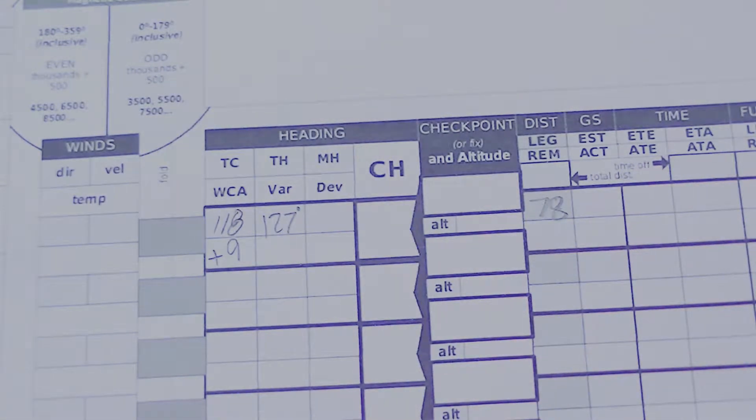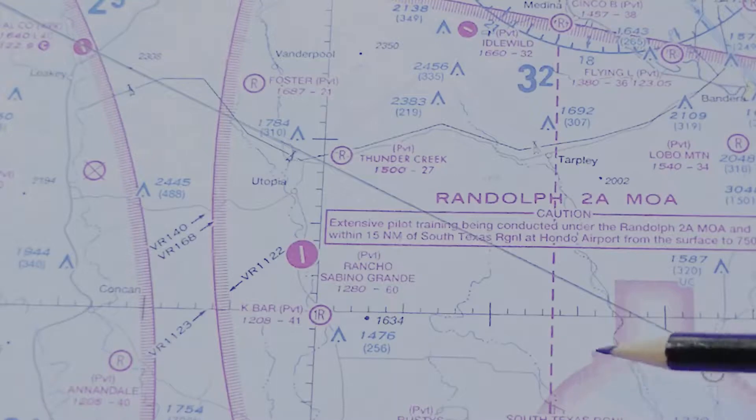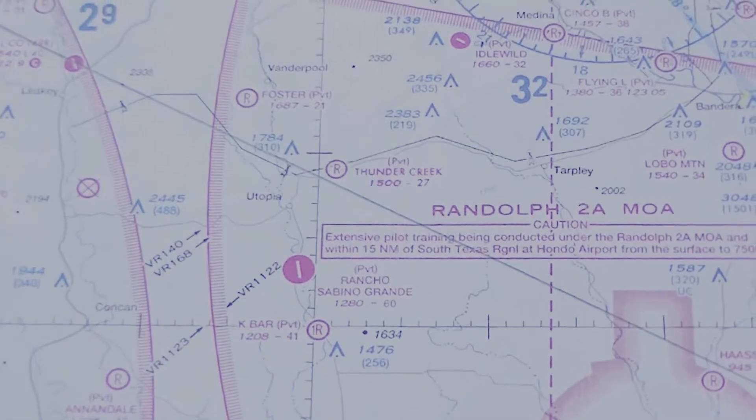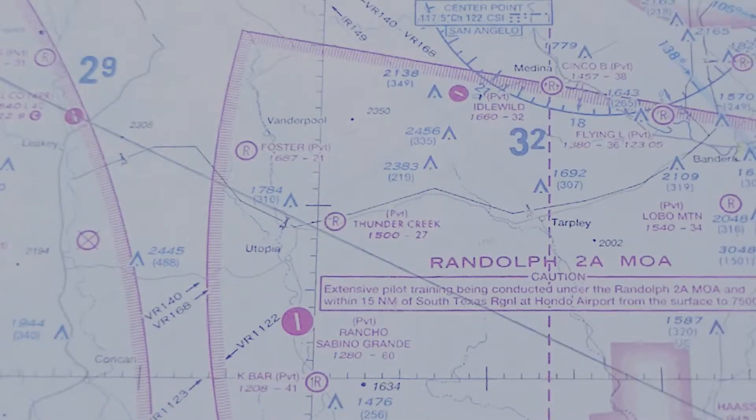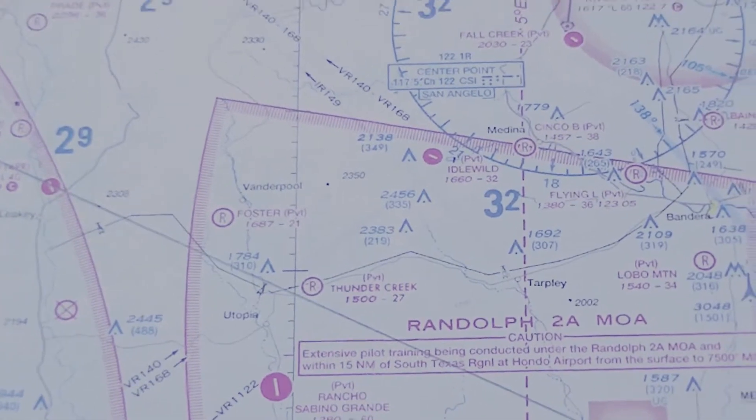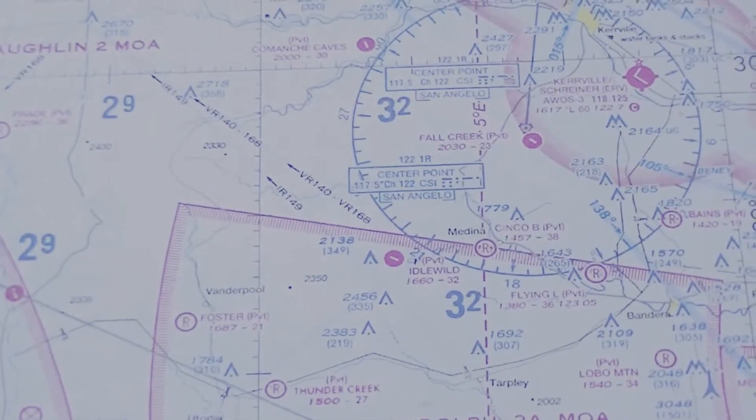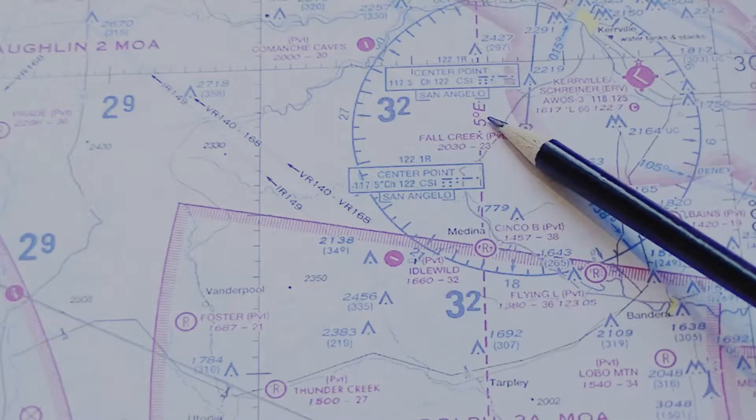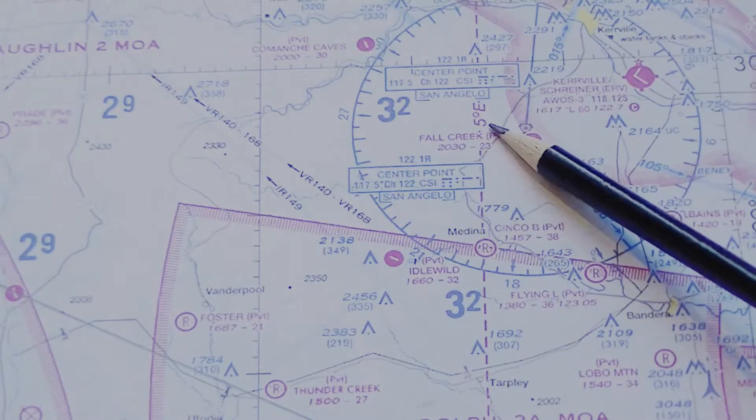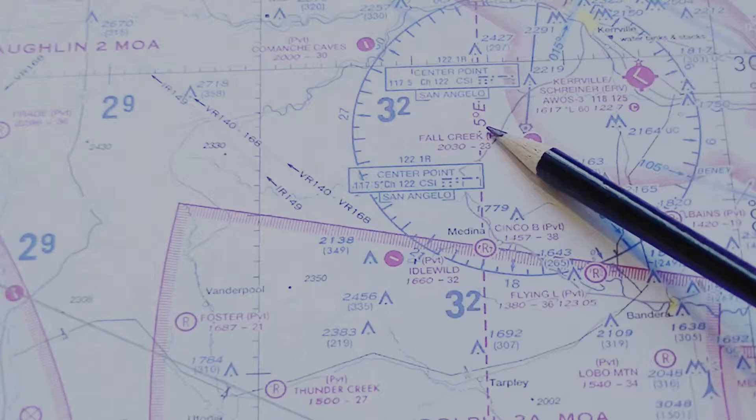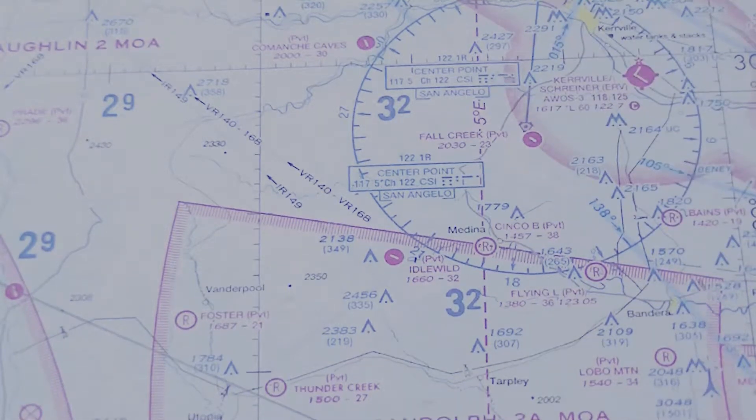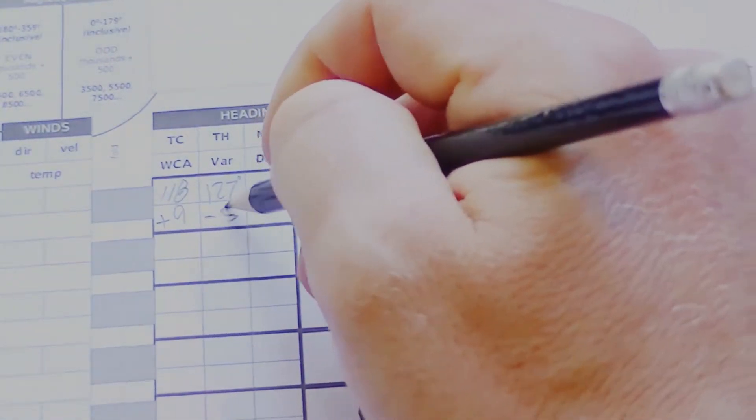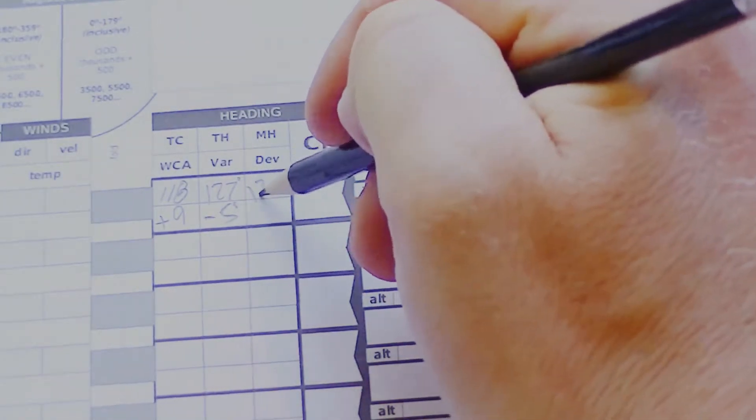Now we have to look at magnetic variation. These magenta dashed lines that go through, they point to the magnetic north pole, which is crossing over the eastern hemisphere line into Siberia. In this case, we have 5 degrees east magnetic variation. So we subtract east from our true heading, and we add west to our true heading. In this case, it's east, so we'll subtract 5 degrees from the 127. That gives us a magnetic heading of 122 degrees.